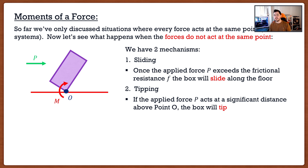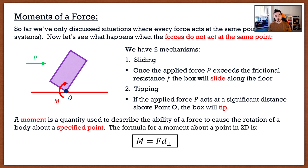What happens is with this force, we actually created something called a moment, because this force did not act through point O. We're now in a situation where we have forces that do not act through a point. A moment is a quantity used to describe the ability of a force to cause rotation of a body about a specified point. Moments are always specialized about a point — the moment about this point is this value, the moment about that point is that value. So moments depend on which point you want to take them about.